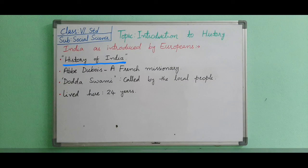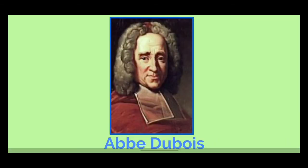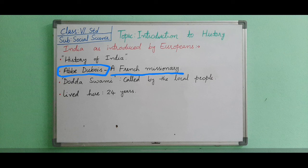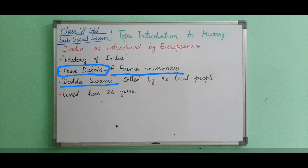Another Indologist was Abbé Dubois, a French missionary who arrived and settled at Ganjam near Srirangapatna. Missionary means religious persons who visit different countries to spread religion, especially Christianity. He lived as a sage by adopting local culture and customs and was called Dhuda Swami by the local people. He wrote Hindu Manners, Customs and Ceremonies, presenting Indian customs, values, thoughts, festivals, and the varna-ashrama system. Abbé Dubois lived in India for 24 years before returning to France.